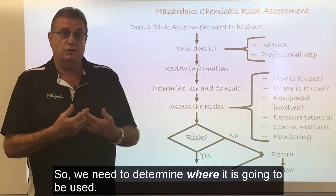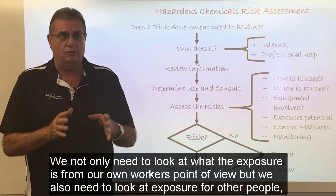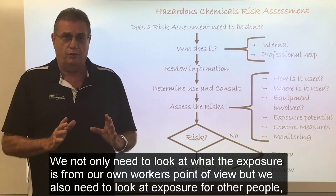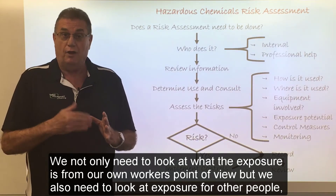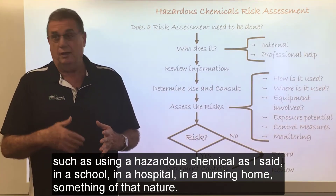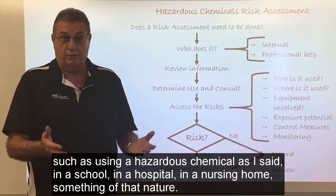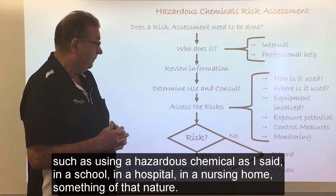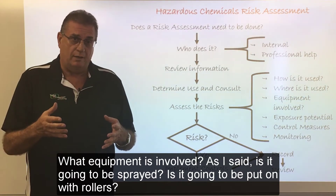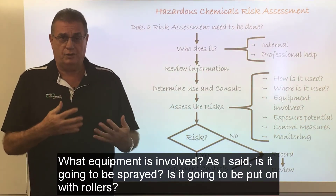We need to determine where it is going to be used. We not only need to look at the exposure from our own workers' point of view, but we also need to look at exposure for other people — such as using a hazardous chemical in a school, a hospital, or a nursing home. What equipment is involved? Is it going to be sprayed, or put on with rollers? What type of equipment is going to be involved?